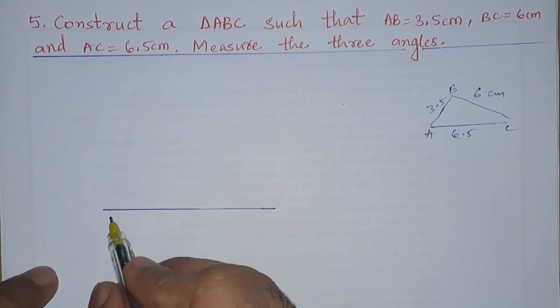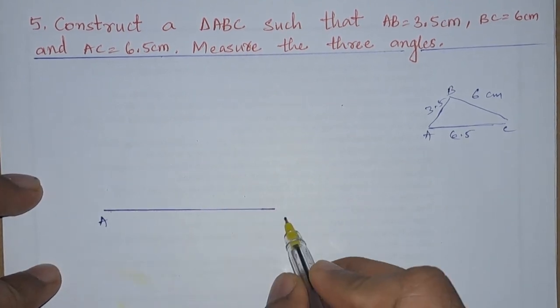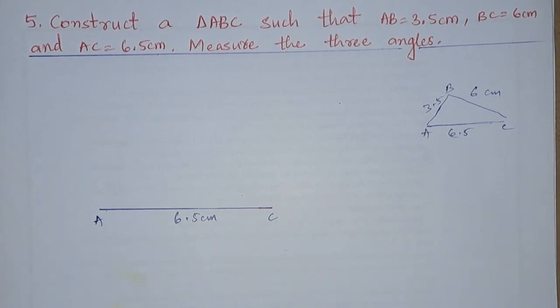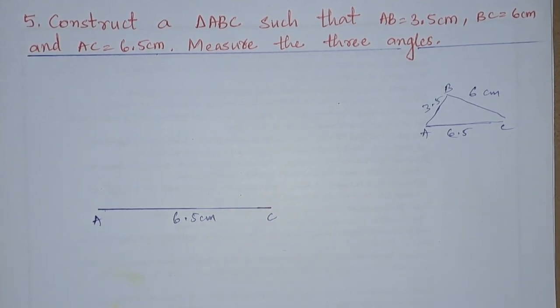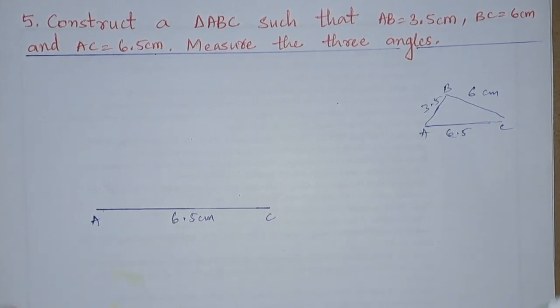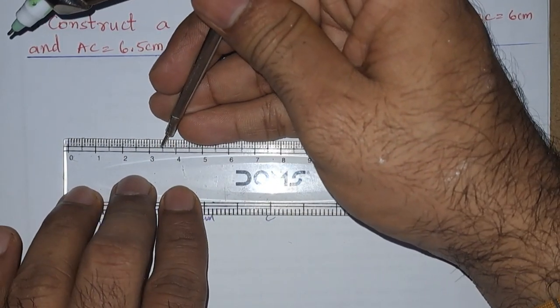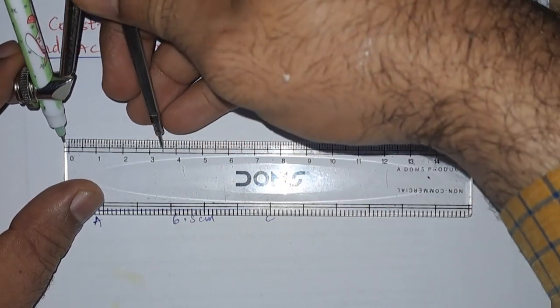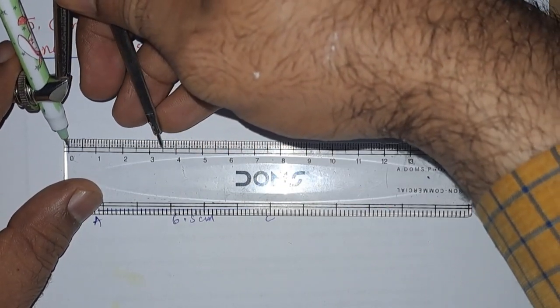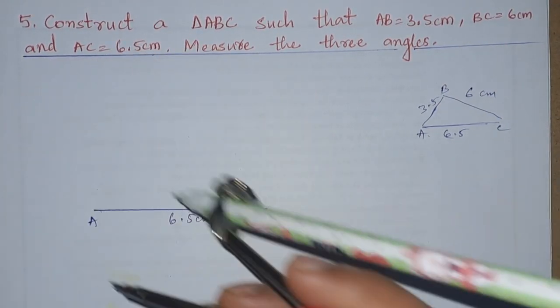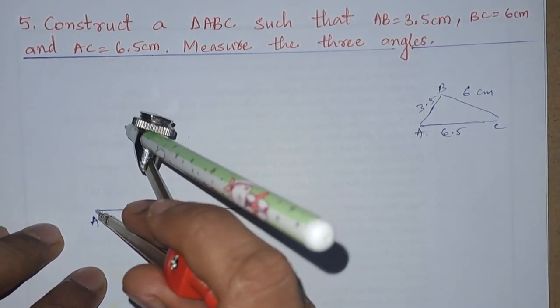So this is AC, 6.5 centimeters. Next we need to take the radius of 3.5 centimeters for AB. So 3.5 centimeters, so here it is 3.5 centimeters. So this is 3.5 centimeters. From A, let us draw an arc.